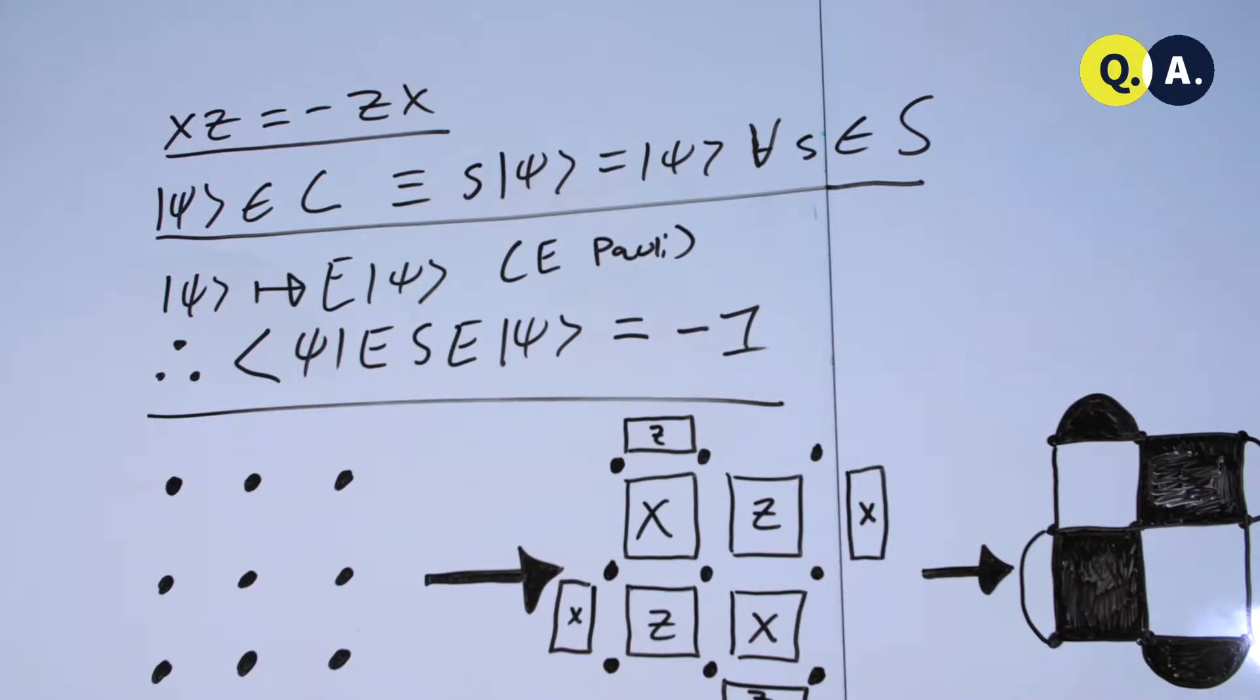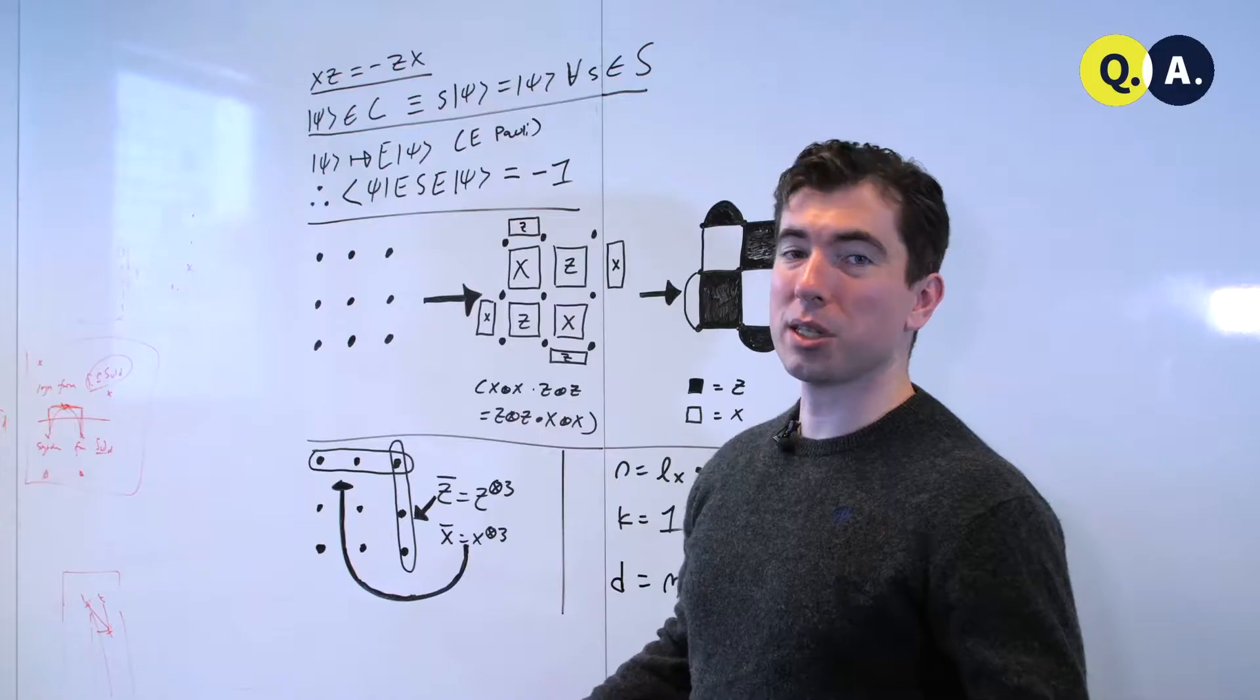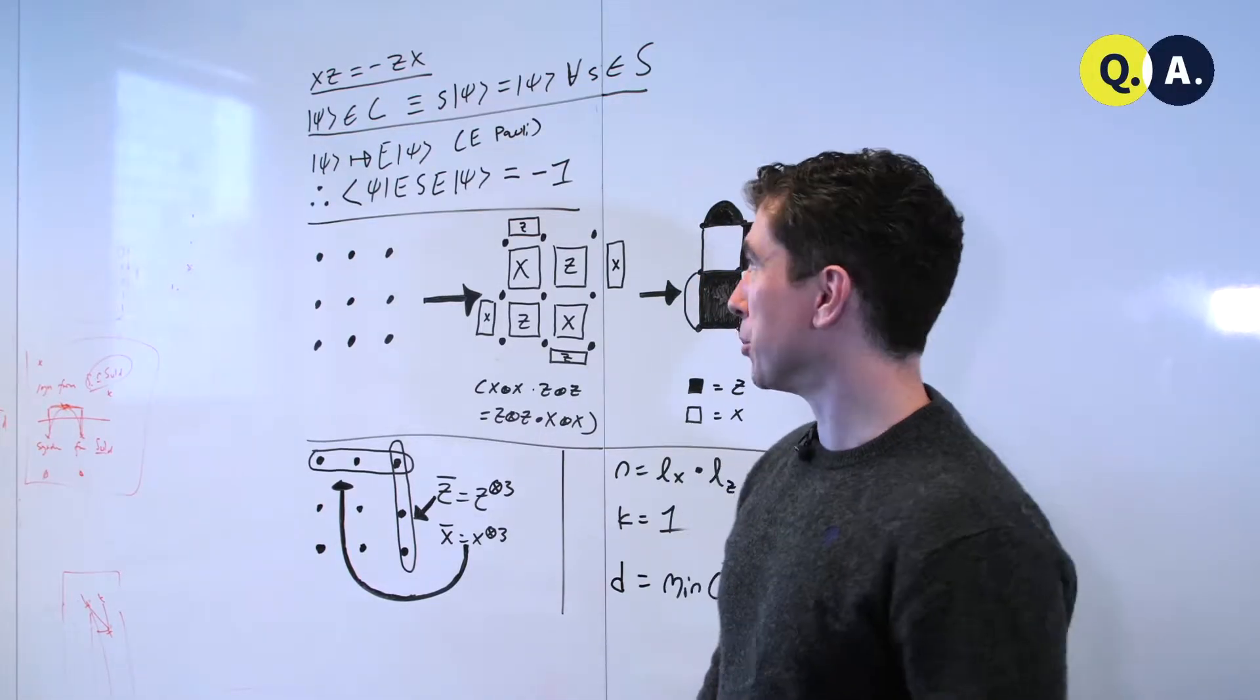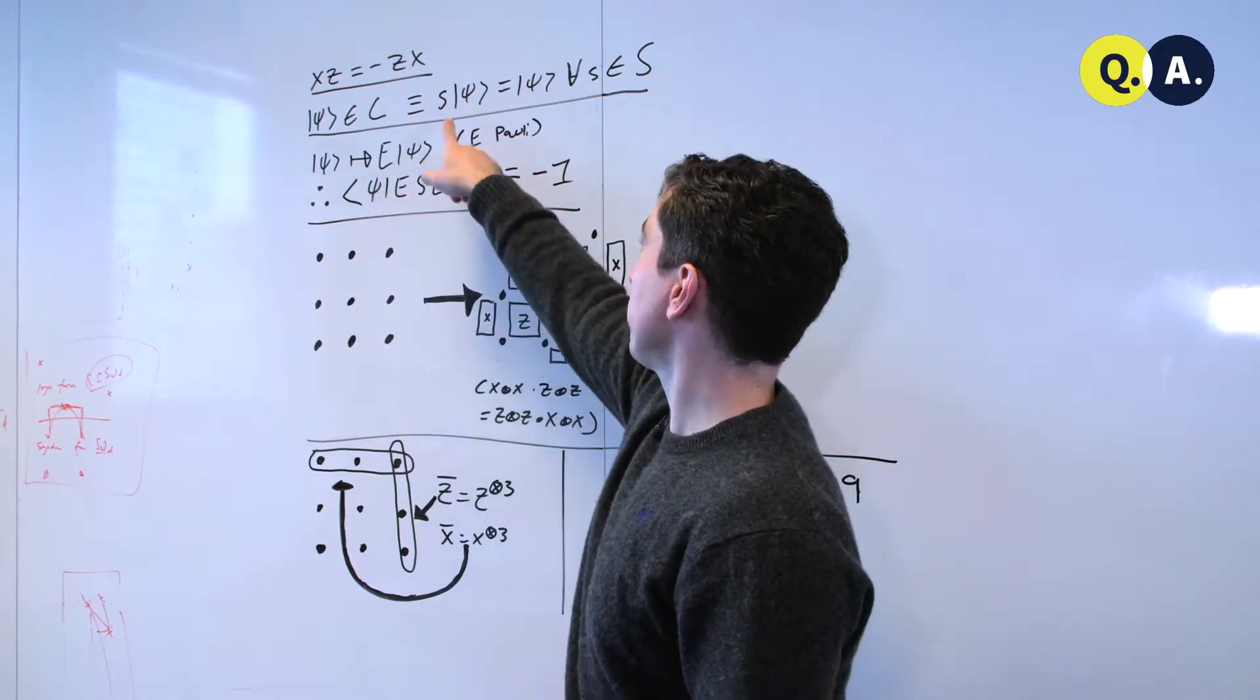And that's nice, and you can do a lot of classically efficient computations with this, but the really nice property is that this allows you to detect errors. Let's assume that, first off,